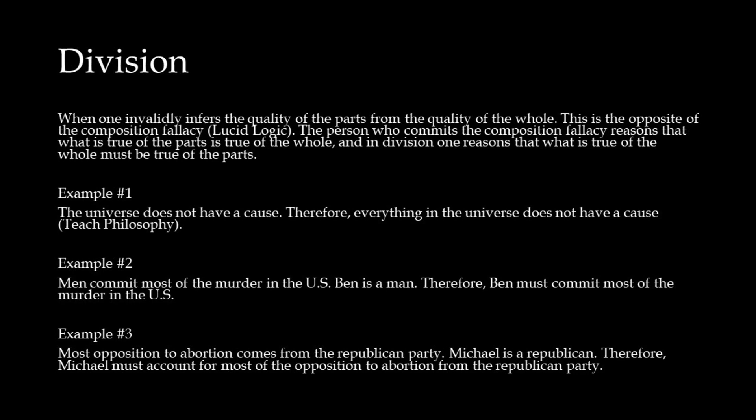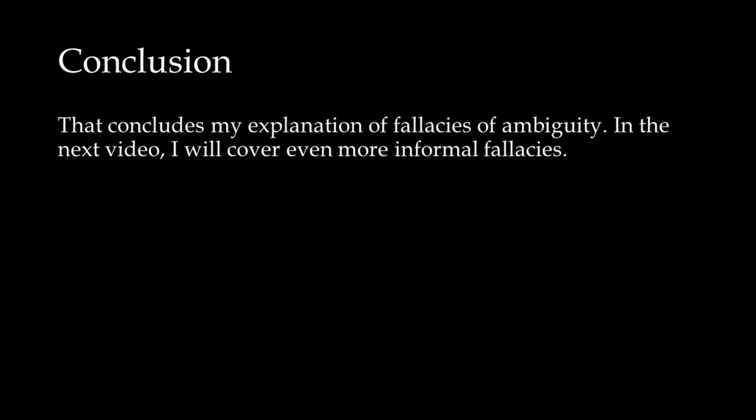Men commit most of the murder in the US. Ben is a man. Therefore, Ben must commit most of the murder in the US. Most opposition to abortion comes from the Republican Party. Michael is a Republican. Therefore, Michael must account for most of the opposition to abortion from the Republican Party. That concludes my explanation of Fallacies of Ambiguity.